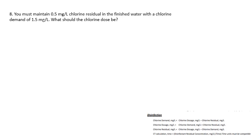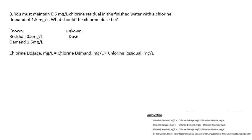Question number eight: you must maintain a 0.5 mg/L chlorine residual in the finished water with a chlorine demand of 1.5 mg/L. What should the chlorine dose be? The residual you want to maintain is 0.5 mg/L and the demand is 1.5 mg/L; you need to find the dose. Using the dosage formula — chlorine demand plus chlorine residual — 1.5 plus 0.5 gives a dosage of 2.0 mg/L.